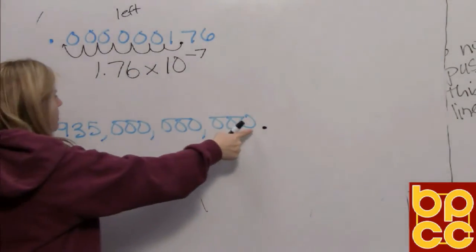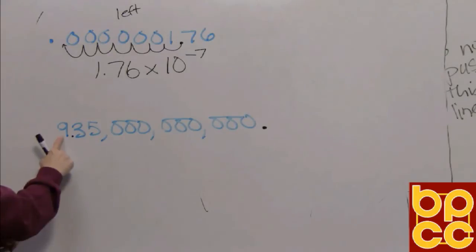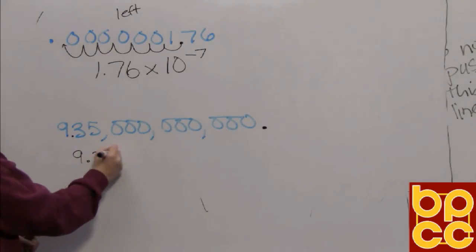Now to put that decimal point to make a number between one and ten, we wouldn't want to put it there—that would make nine hundred thirty-five. Not there—that would make ninety-three. But if we put the decimal point here, that makes nine and thirty-five hundredths, which is between one and ten.